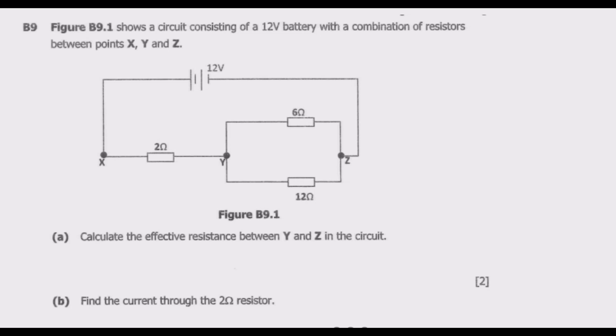Let us look at question B9. Figure B9.1 shows a circuit consisting of a 12-volt battery with a combination of resistors between points X, Y, and Z. Question A: Calculate the effective resistance between Y and Z.